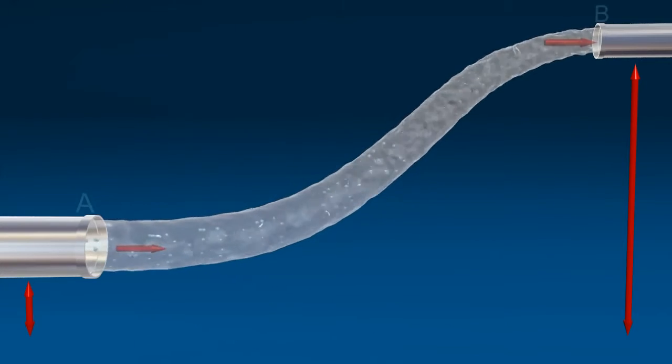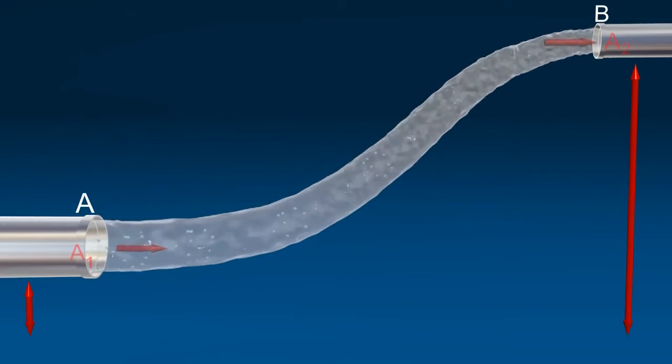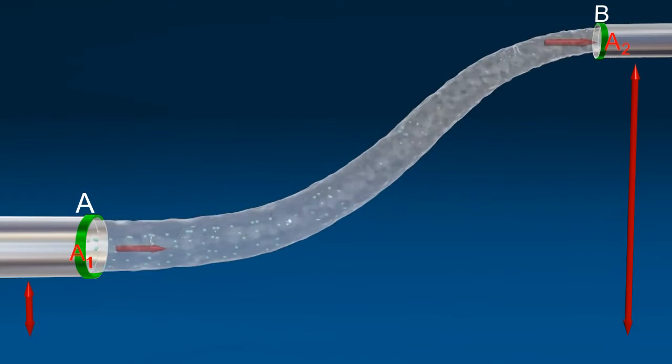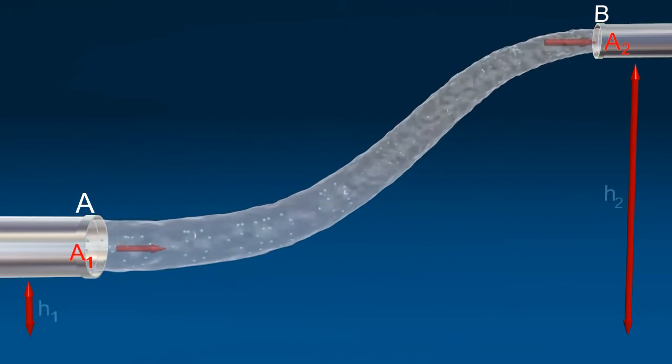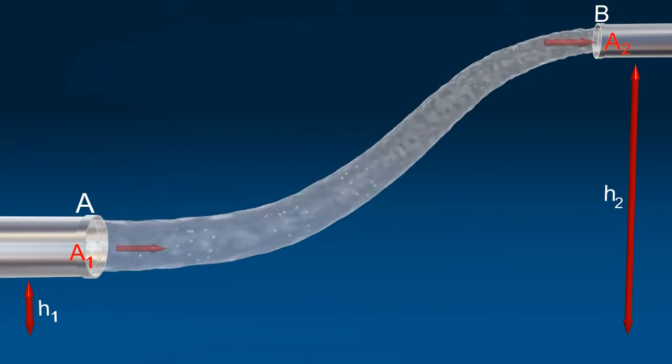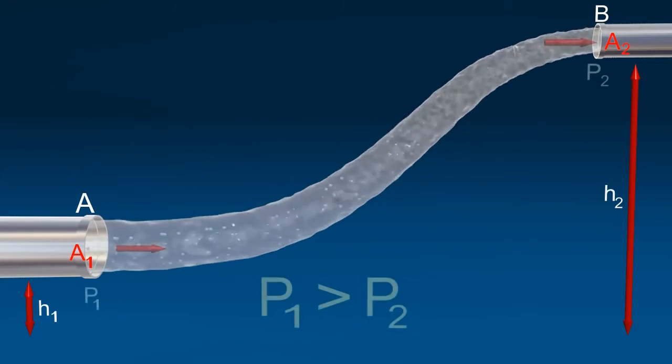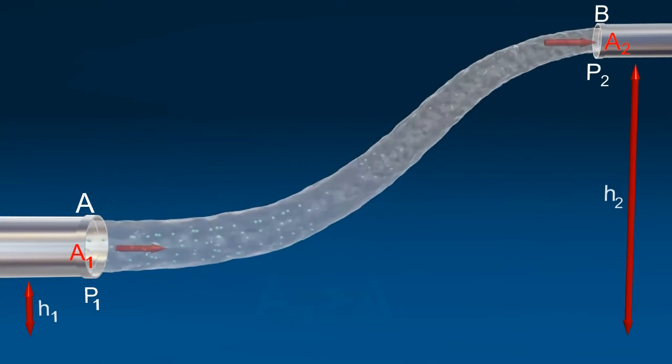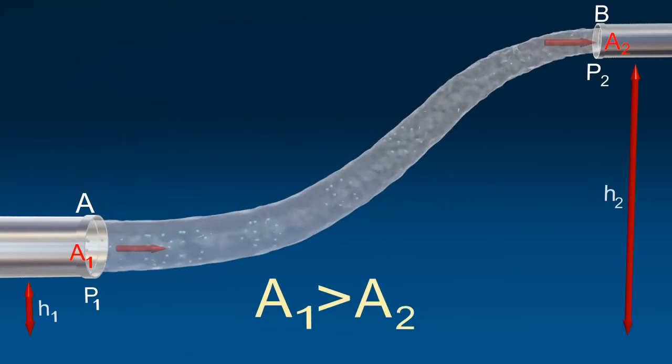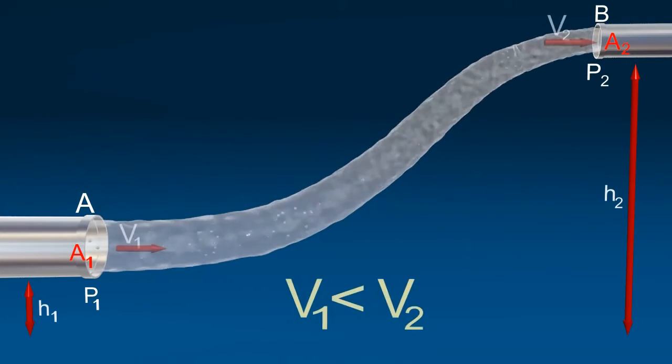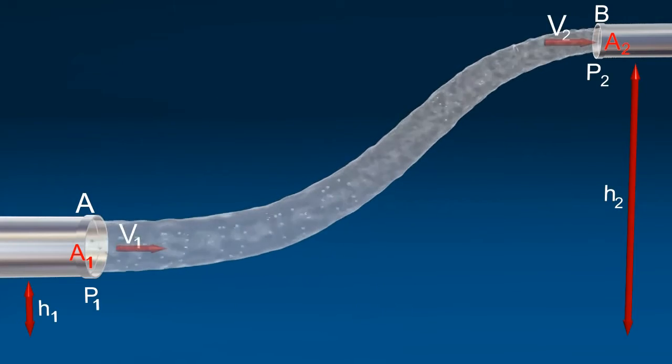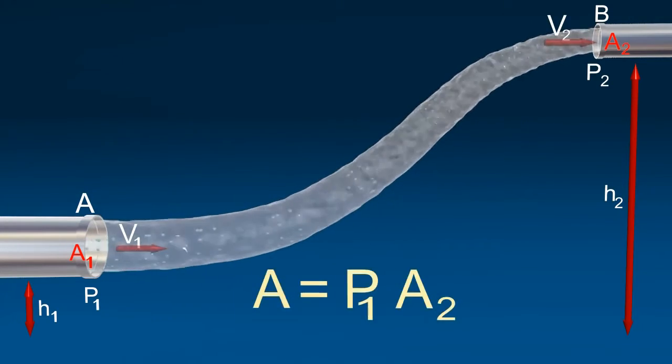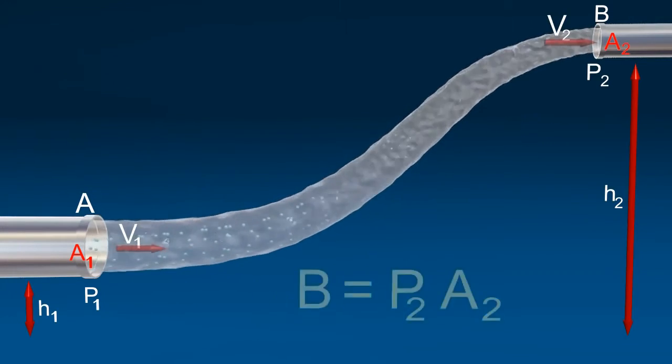Consider a tube AB of varying cross section A1 and A2 and at different heights H1 and H2. Liquid is flowing from A to B. P1 is greater than P2. Here A1 is greater than A2, so V1 is less than V2. The force on the liquid at A and at B.